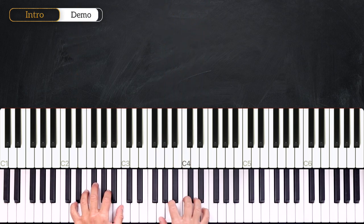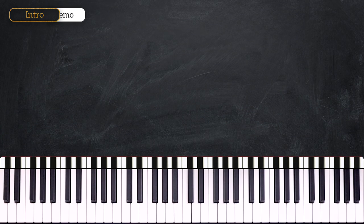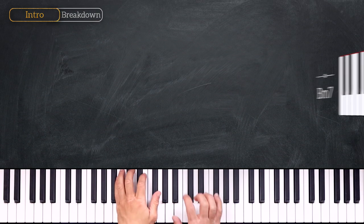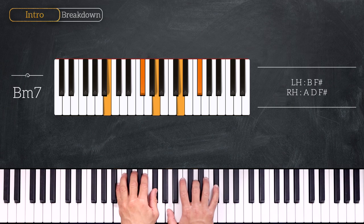Alright, so in this first part we are going to learn the introduction. So here are the chords. We start by playing B minor 7. B F sharp on the left hand and A D F sharp on the right. Very nice.